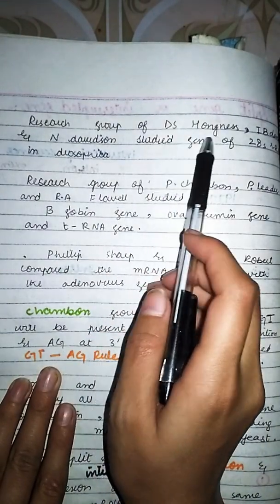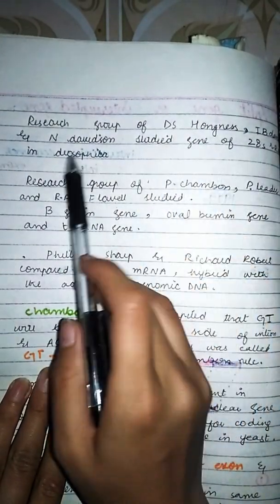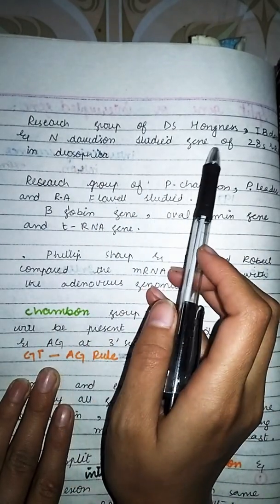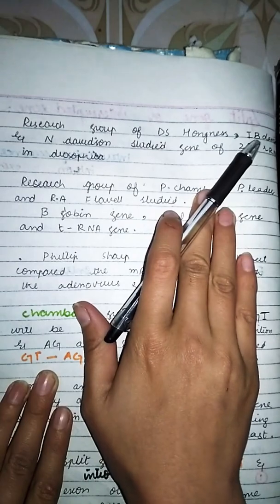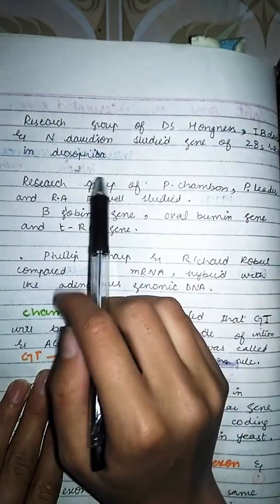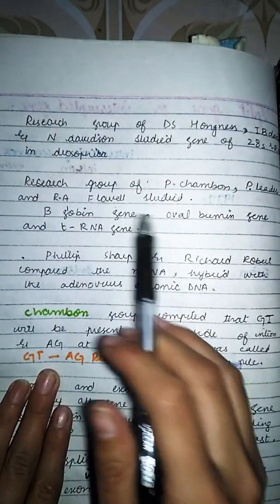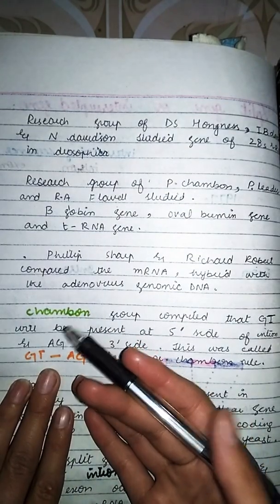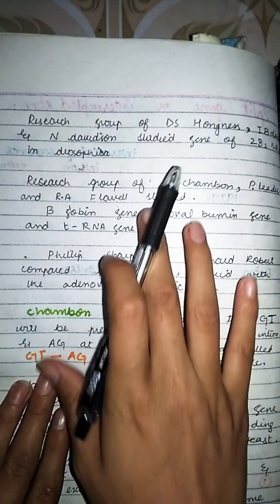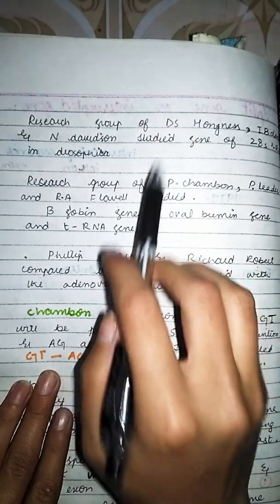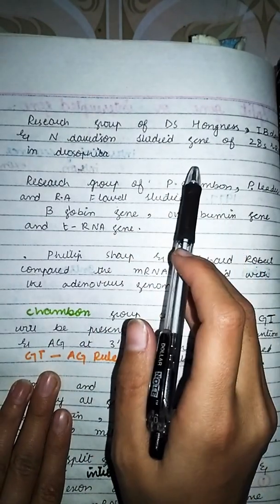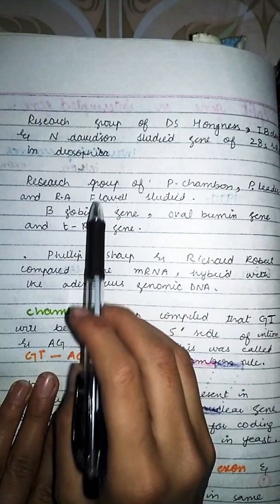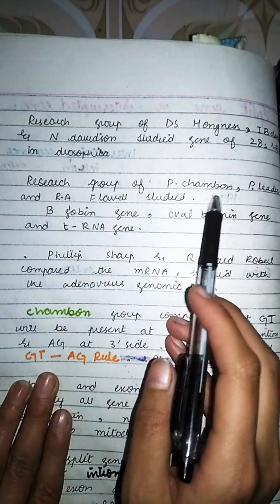Second group: D.S. Hogness، I.B. Davidson اور N. Davidson نے Drosophila کی 28S ribosomal RNA gene کا مطالعہ کیا۔ ان لوگوں نے جو research کی وہ Drosophila پر split gene کے حوالے سے تھی۔